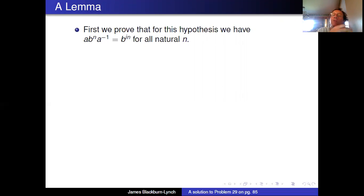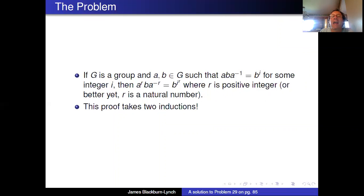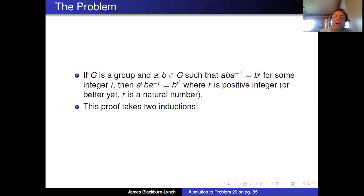So notice what I've done here is in the original theorem we're talking about a^r ba^(-r), and here this is just one a. The thing that has changed is the thing in the middle, it could be any power. So a times b to any power times a^(-1) is b^i times that any power, so for any natural numbers by induction.